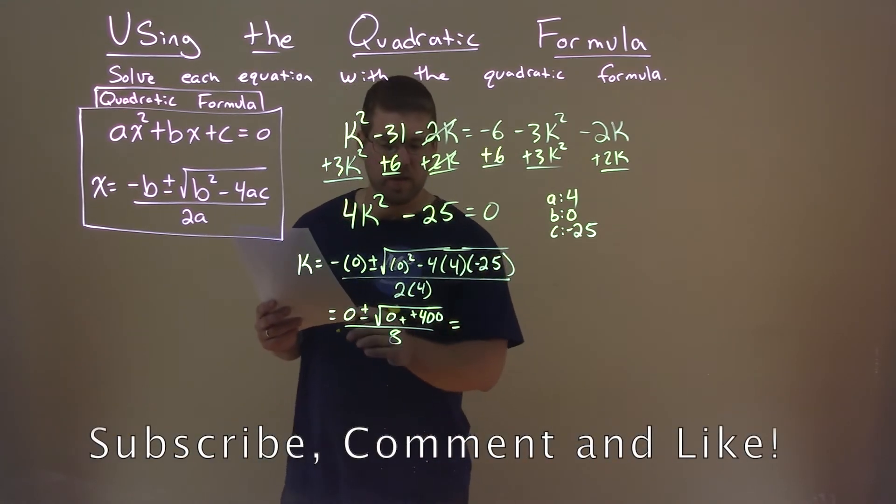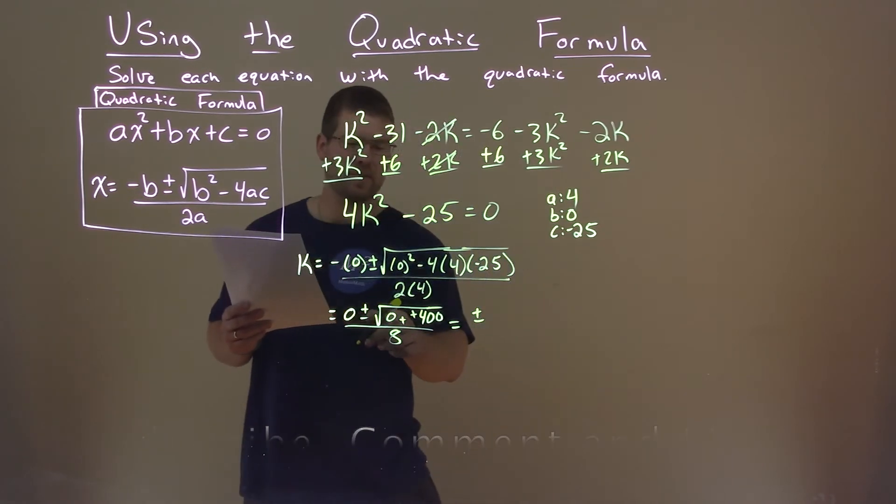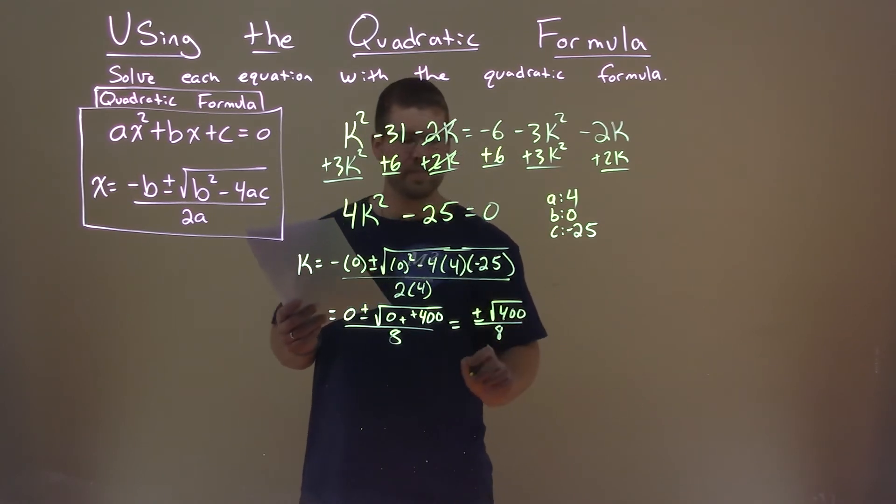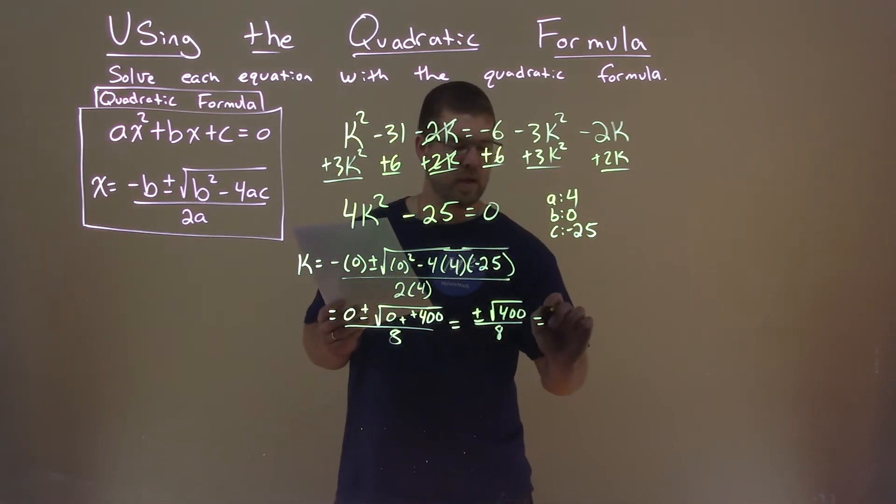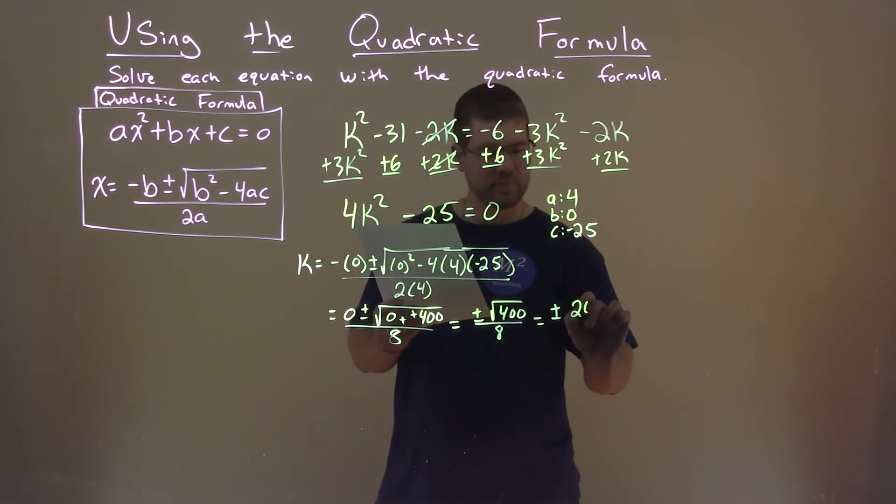So what does that equal? Well, this 0 we don't really need it anymore. So let's write the plus or minus here. 0 plus 400 is 400. The square root of 400 over 8. And what's the square root of 400? So we have plus or minus, the square root of 400, which is 20, divided by 8.